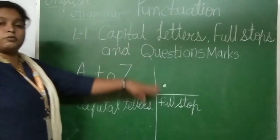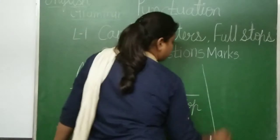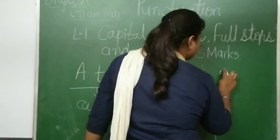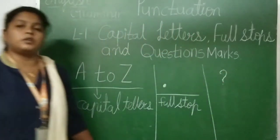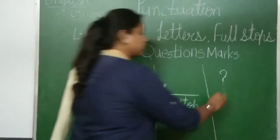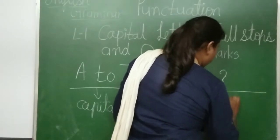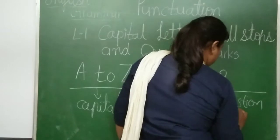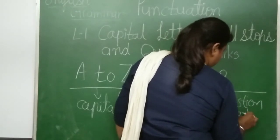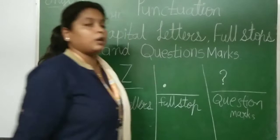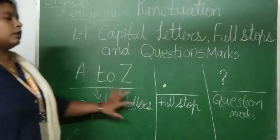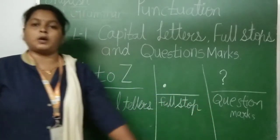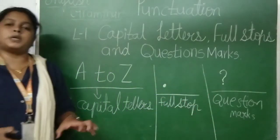And after that, question marks. Whenever you have seen this type of symbol, that is a question mark. So these are the basic punctuation marks: capital letter, full stop, and question marks. These all are mandatory to make a sentence.